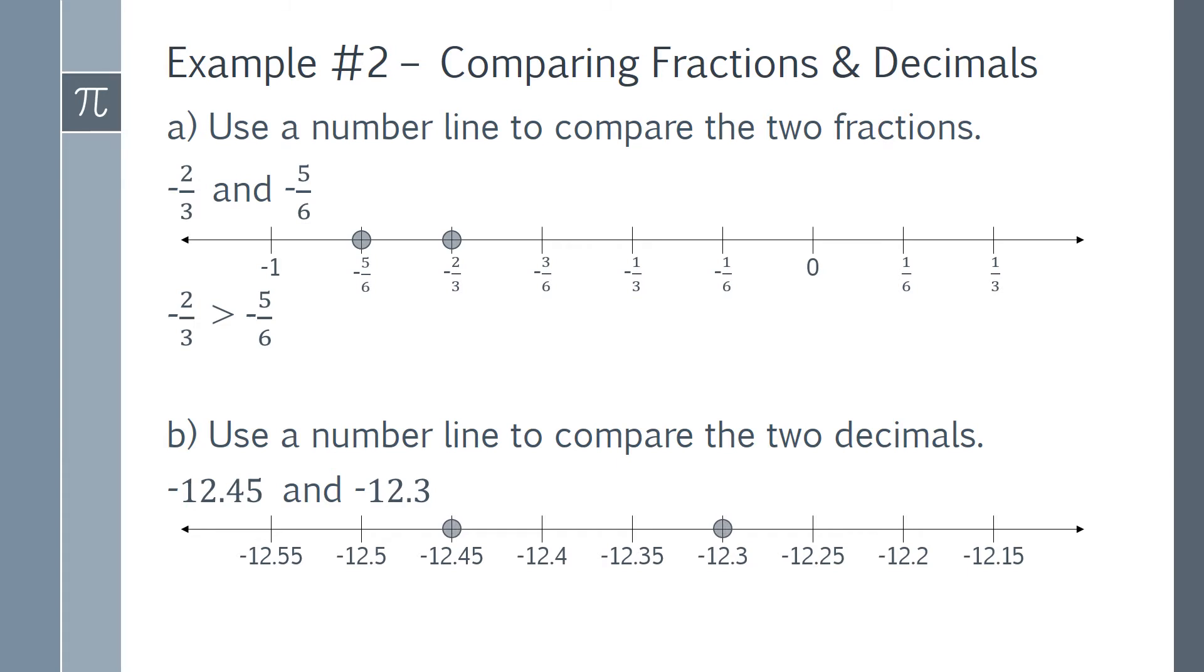Notice that negative 12.45 is farther to the left on the number line, so negative 12.45 is less than negative 12.3. This is because the value of the numbers decreases as you move to the left on the number line.